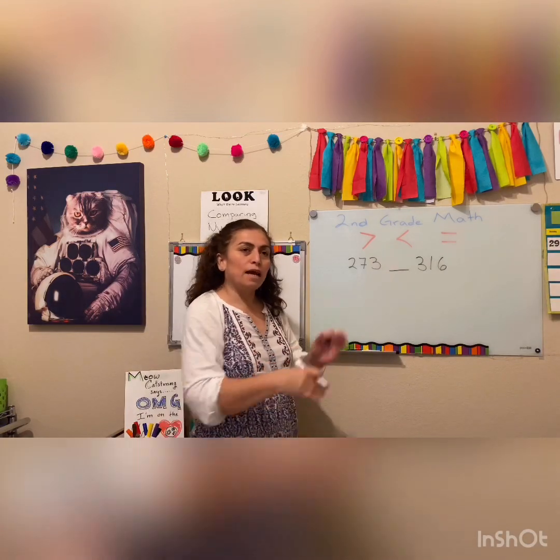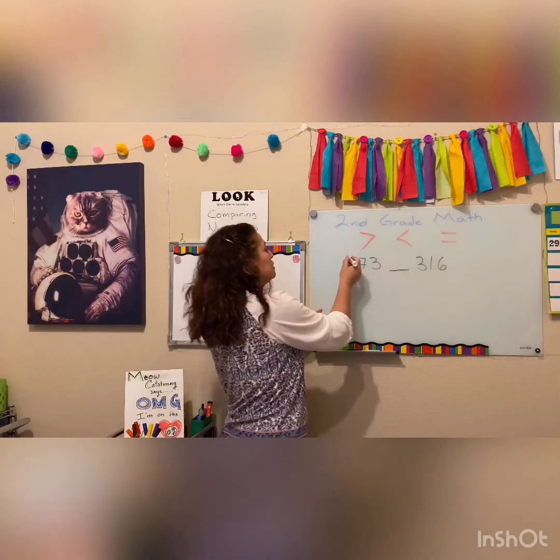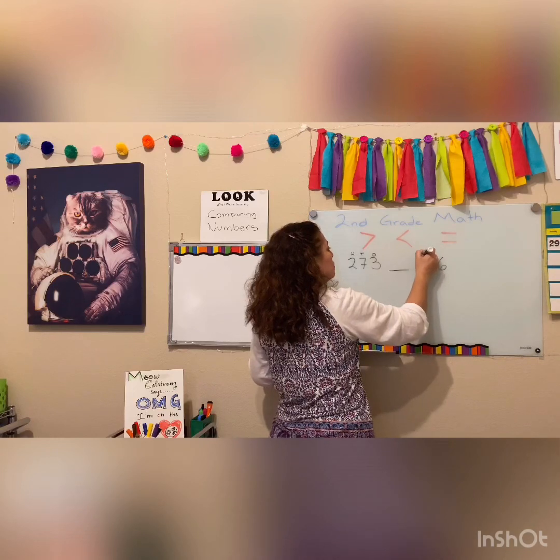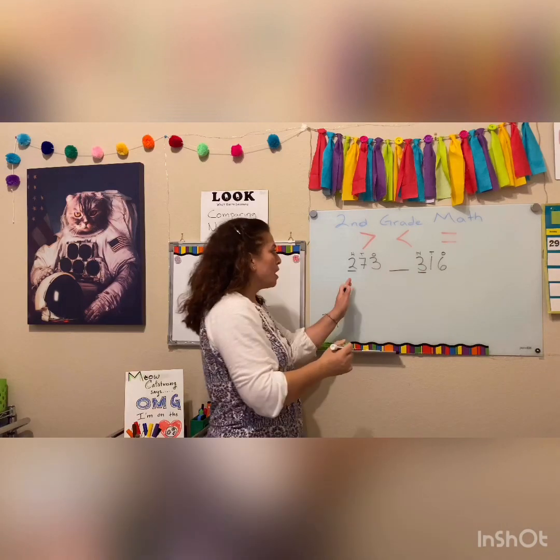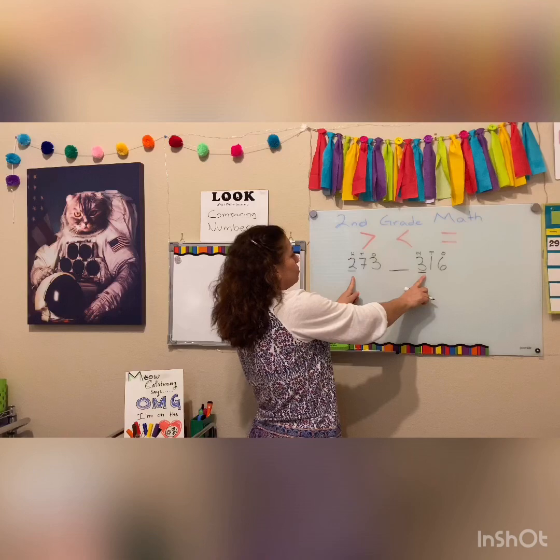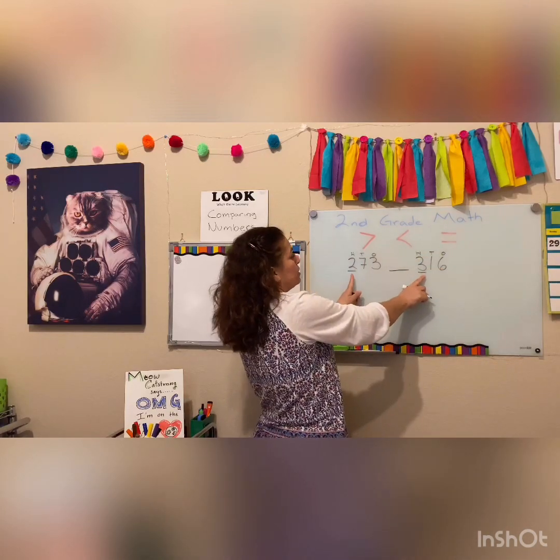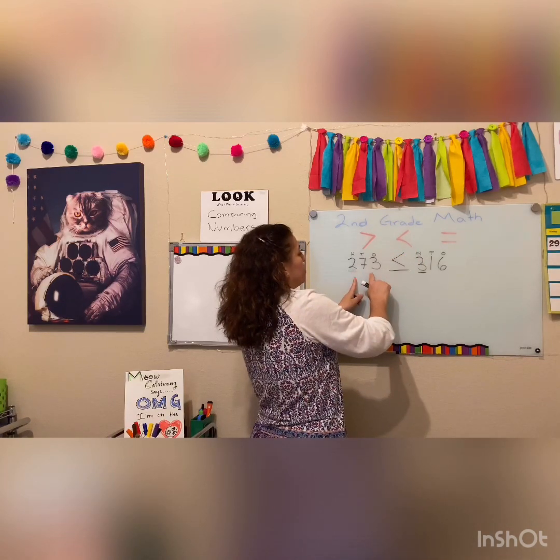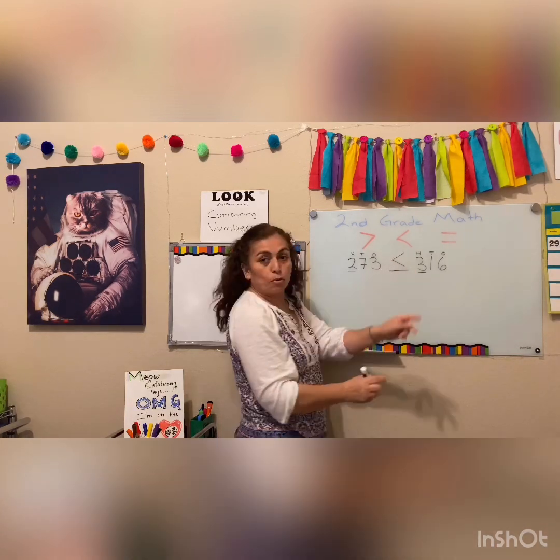To compare my numbers I can start on this part when I compare numbers from the hundreds place. My hundreds, tens and ones, hundreds, tens and ones, and I'm going to start with the hundreds. I'm going to see which one is greater, so I know that three is more than two. I don't need to go to the other numbers, to the tens and the ones, because I already know that three is more than two. So this number is going to be 273 is less than 316. So that's the way I read my number.